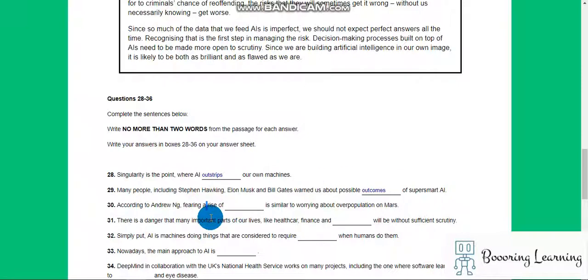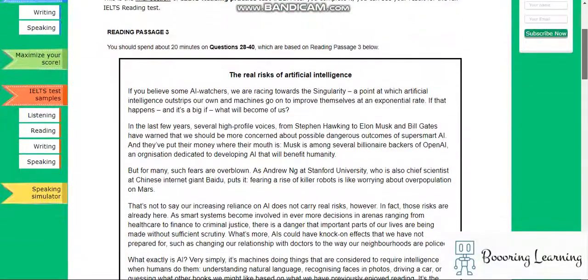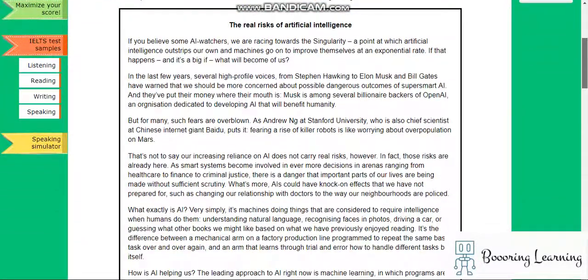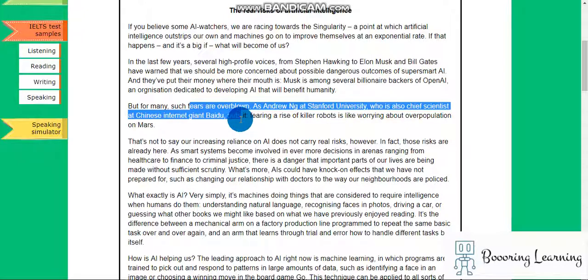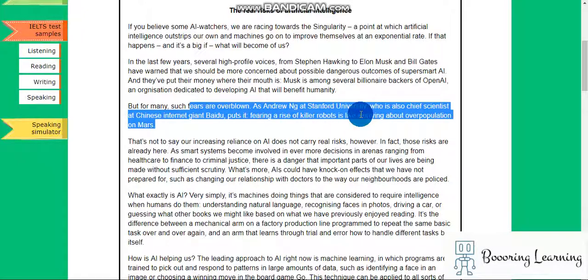According to Andrew, fearing a rise of, okay Andrew as our keyword. But for many such fears are overblown. As Andrew Ng at Stanford University, was at the Chinese internet giant Baidu, okay puts it: fearing a rise of killer robots is like worrying about overpopulation on Mars. Cool.